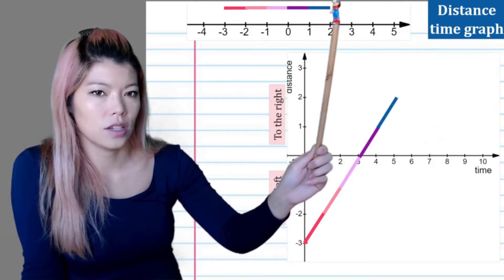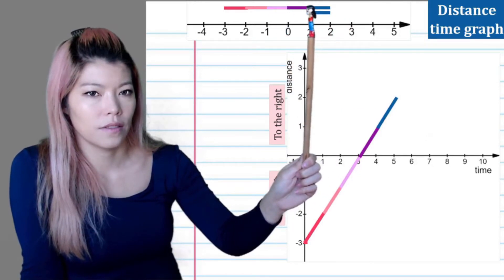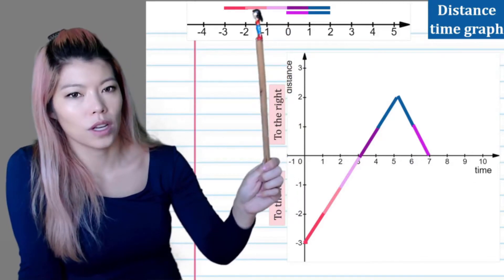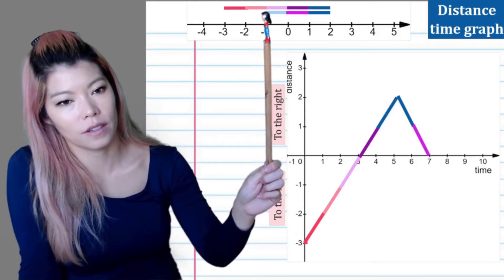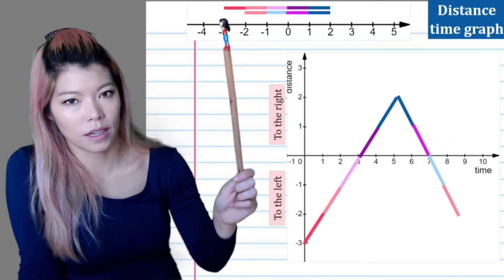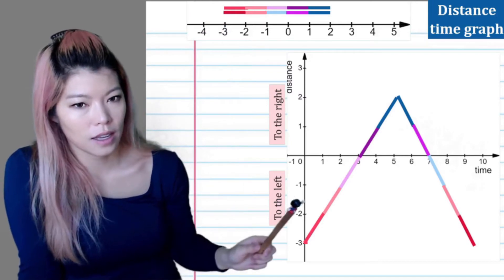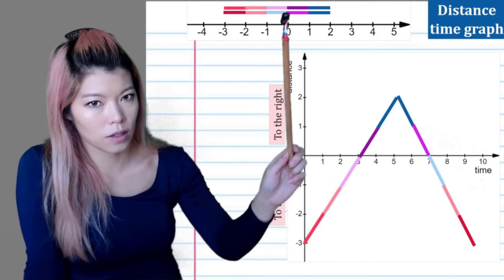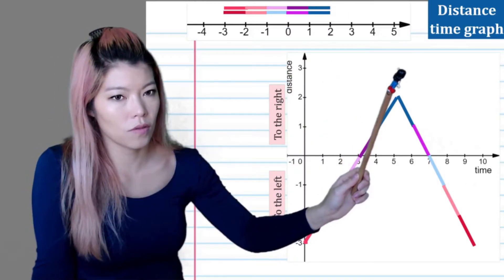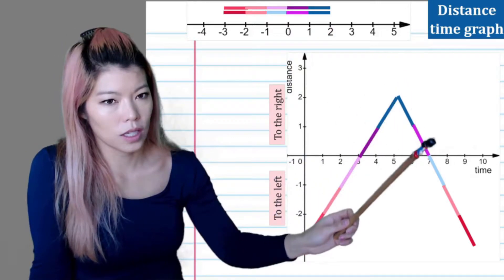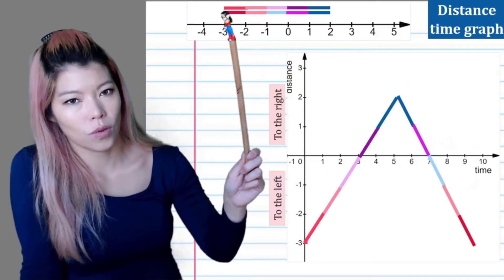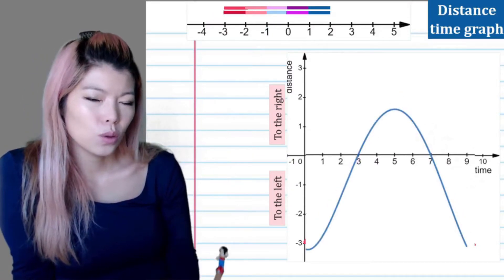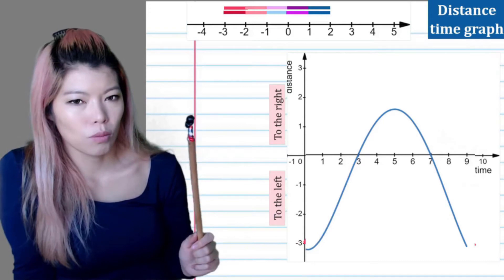She walks to the right again, then turns around and walks towards the center. At zero she starts walking away from the center in the negative direction — away from the center, away from the center. I've color-coordinated each step so you can see it clearly. In reality it would look more like a curve, because things don't move and suddenly stop — they move, slow down, and stop.